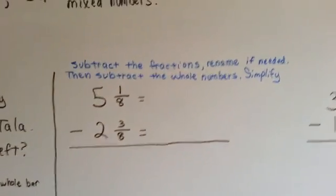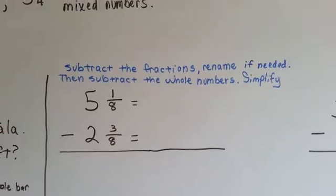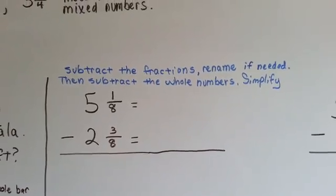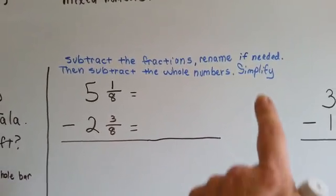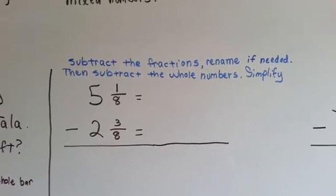All right, well, if we subtract by regrouping, we subtract the fractions first, we rename them if needed, and then we subtract the whole numbers and make sure we simplify any fractions at the end that can still be made smaller.